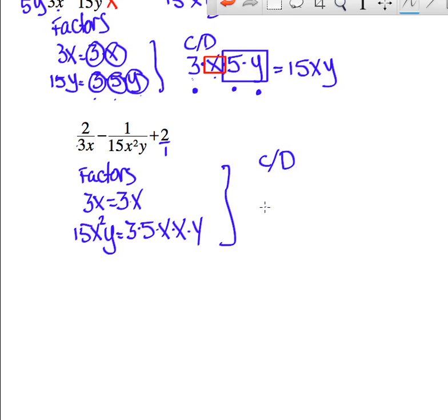So the common denominator needs all of the factors. It needs one 3. It needs one x. It needs one 3, got that. It needs one 5, don't have that yet. It needs one x, have that. It needs a second x, so you need one more x. And it needs one y. So your common denominator here will be 3 times 5 is 15, x times x is x squared, and then you get a y. So here, if I make my fraction now, the common denominator is going to be 15x²y.